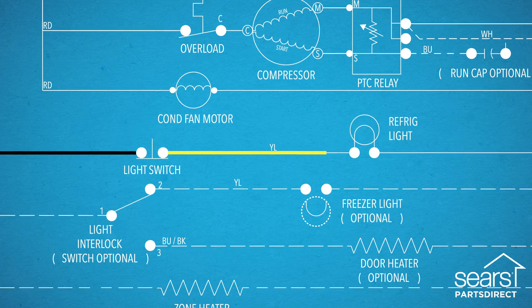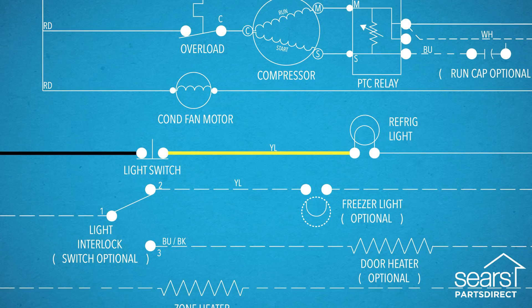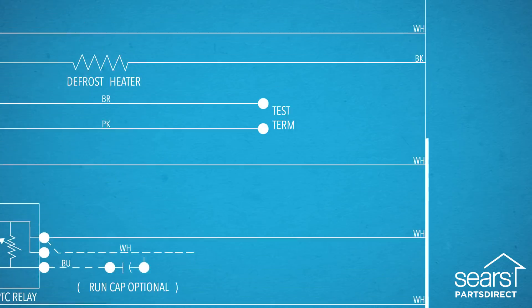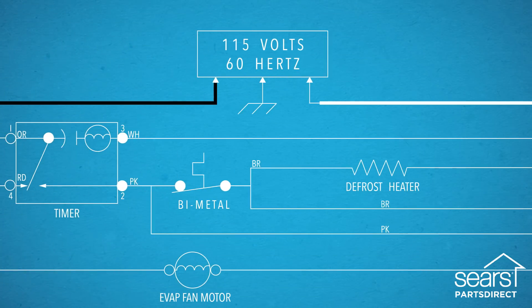The yellow wire connects the light switch to the refrigerator light socket. To complete the circuit, the white wire carries current to the neutral prong of the power cord.